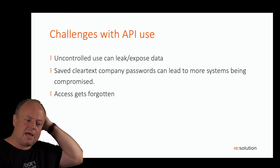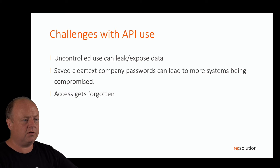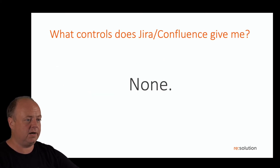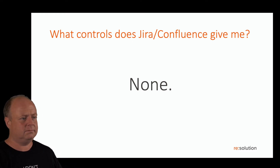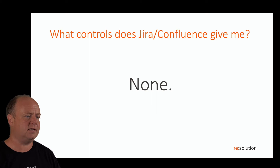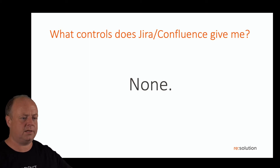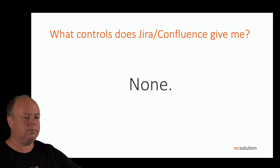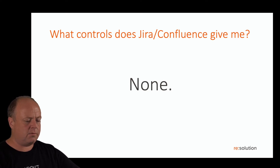So what controls does Jira and Confluence give you out of the box? Well, simple answer: none really. There's nothing to restrict basic auth on the APIs, nothing to limit API access with built-in tools in Jira and Confluence.